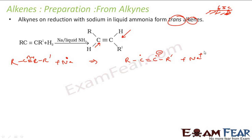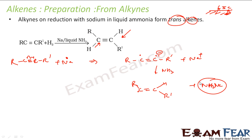Now I have liquid ammonia. From liquid ammonia, this carbanion will attract a hydrogen. So from ammonia (NH3), an H⁺ attacks and attaches to the carbon, and NH3 becomes NH2⁻, which reacts with Na⁺ to form NaNH2. So what you get at this stage is a vinyl radical with one hydrogen already added from NH3.